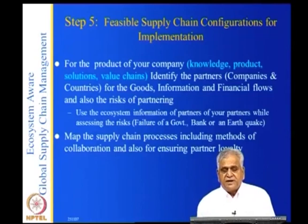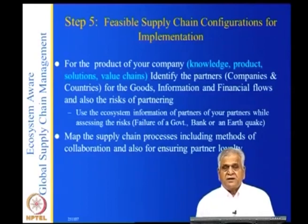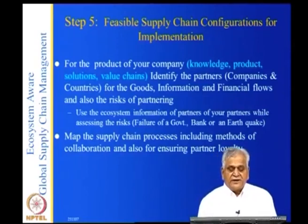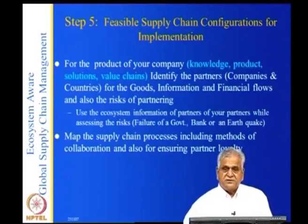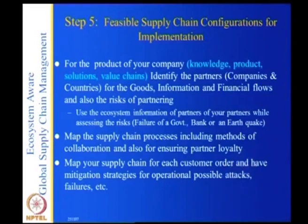Multi-tier risk management means you should not only know about your suppliers but their suppliers, their suppliers' suppliers, and go up to the mines. This could be a failure of the government, a bank, or an earthquake. So there could be any kind of problems that can occur. The supply chain process includes methods of collaboration and also ensuring partner loyalty. When outsourcing, partner loyalty should be ensured — it is not only expected but must be guaranteed. You should map your supply chain for each customer order and have mitigation strategies for possible failures and attacks.